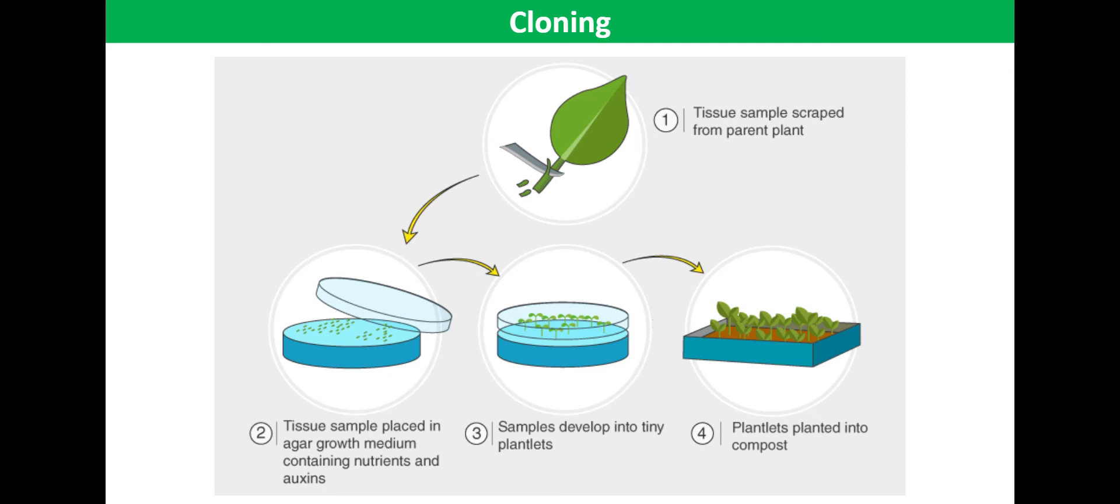Micro-propagation involves a number of steps. Firstly, the suitable plant material needs to be selected and cut into small pieces. These are called explants. Explants could be tiny pieces of leaf, stem, root or even bud. Meristem tissue is often used as this is always free from viral infection.